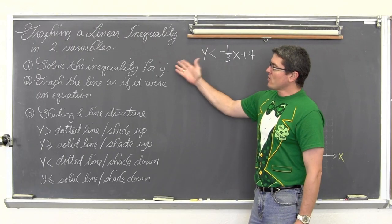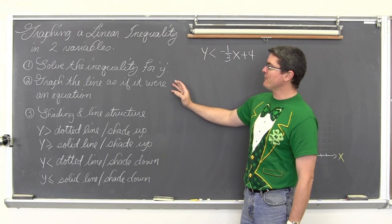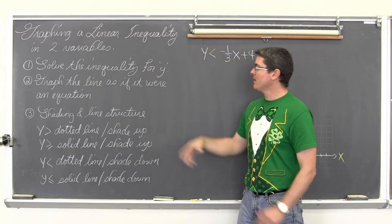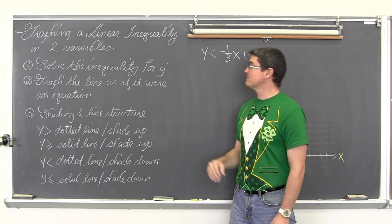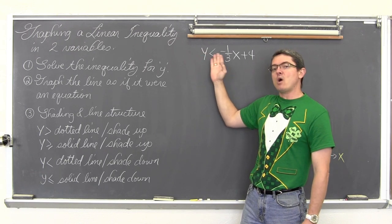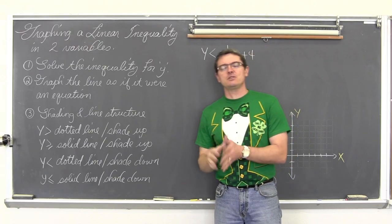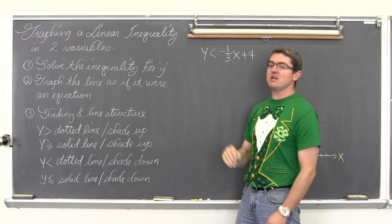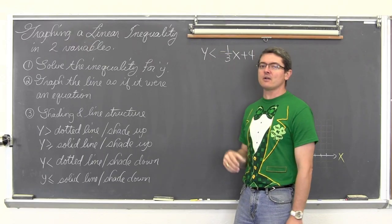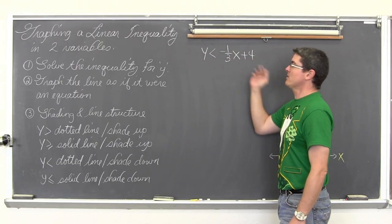We are going to be solving the inequality for y. We are going to graph the line, because that is what a linear function is — it is a line — as if it were an equation. So when I do this example, even though it says y is less than negative one-third x plus four, we are going to temporarily pretend there is an equal sign there so we remember how to graph that linear function, in this case using the slope-intercept form.